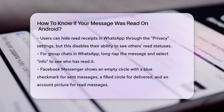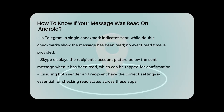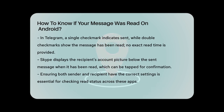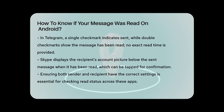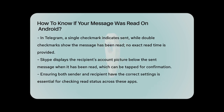Telegram is another app where you can see if your message was read. When you send a message, you'll see a single checkmark. The checkmark turns into double checkmarks when the recipient opens the conversation and reads your message. Unlike WhatsApp, Telegram doesn't offer a Message Info menu, so you can't see the exact time someone reads your message.